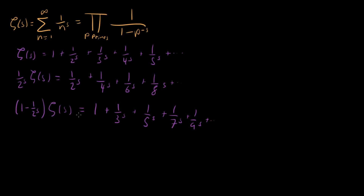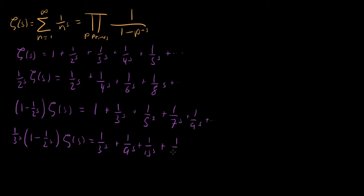Now, why don't I do a similar thing but with 3? Three is the next prime number, so I can multiply this whole thing by 1 over 3 to the s. What are we given then? We have 1 over 3 to the s plus 1 over 9 to the s plus 1 over 15 to the s plus 1 over 21 to the s, and keep going. This series has every single number which has 3 as a prime factor but doesn't have 2 as a prime factor — so no term will ever be even in the denominator, but every single term will have at least one factor of 3.